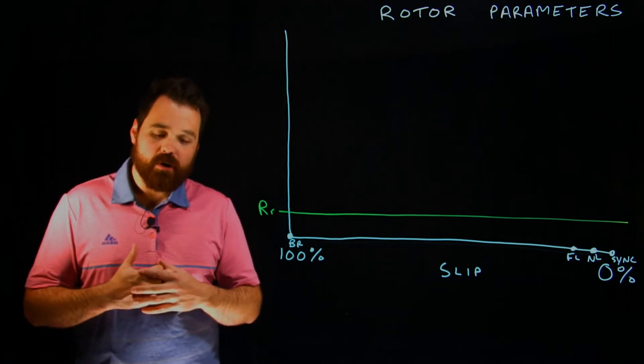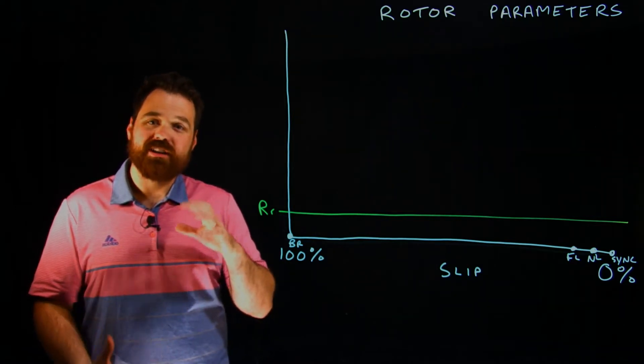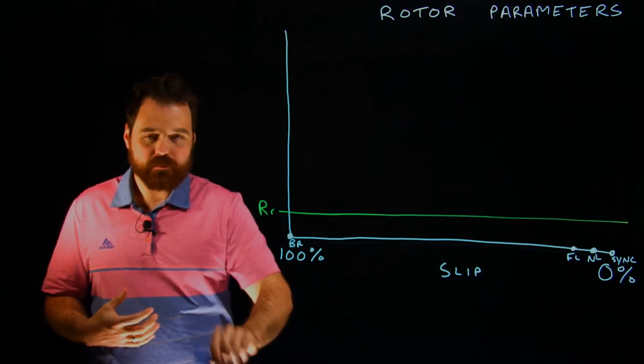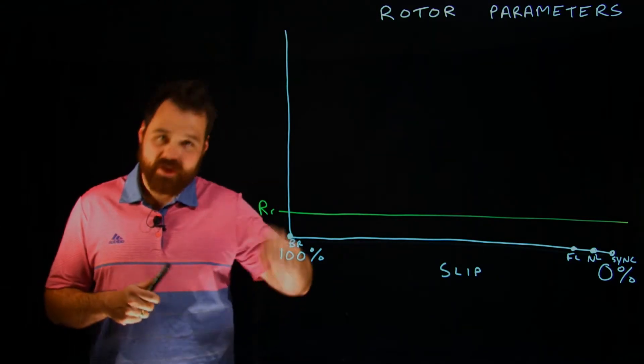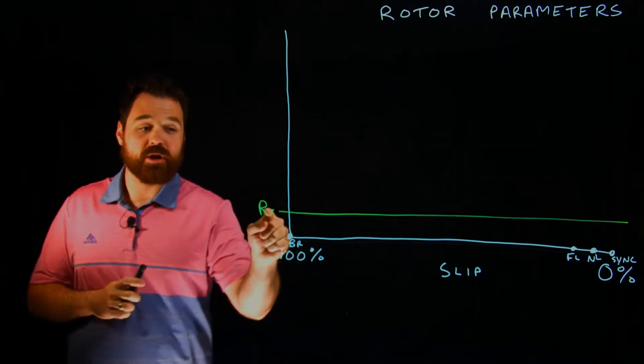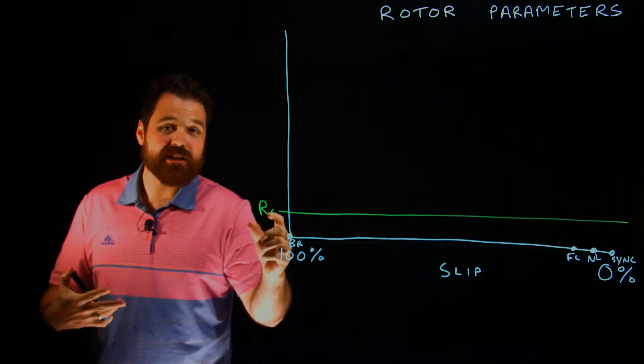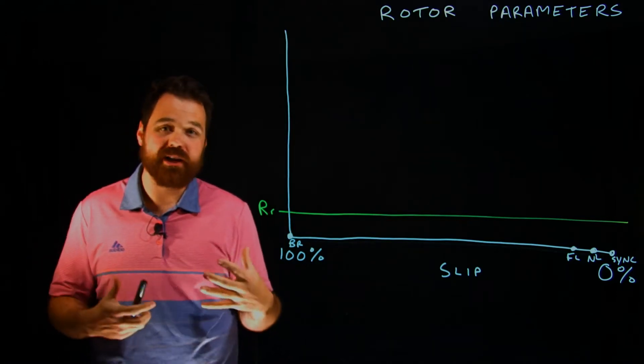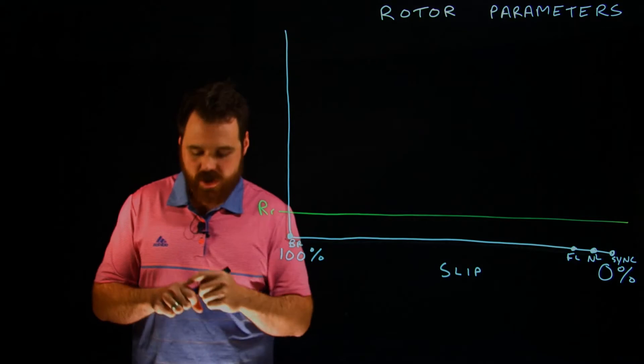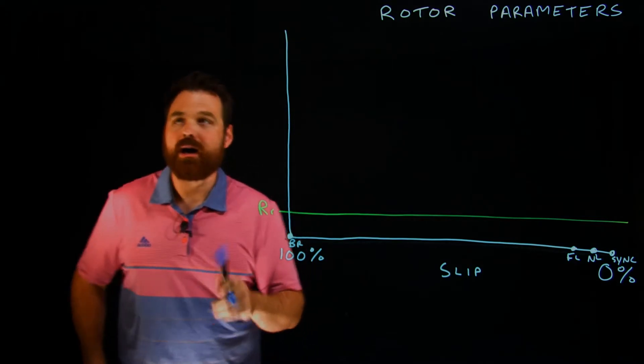So now we kind of talk about everything that's getting actually induced into the rotor. We have that spinning magnetic field going around the rotor. Because our rotor has resistance and impedance, there's a path for current to flow. So we're going to get current to flow. But let's start with the voltage.